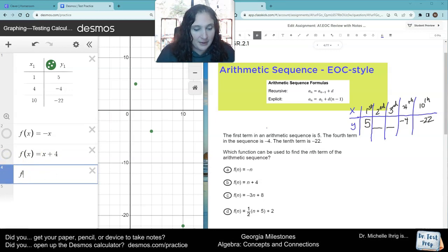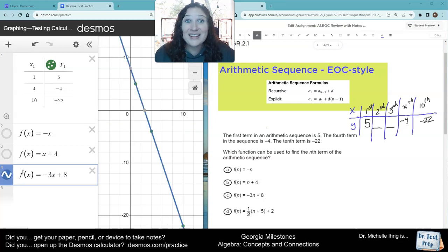So now I'm going to turn that one off and type in the third answer choice. Negative three x plus eight. Look at that! Do you see how it goes through all of my green dots? It goes through all my green dots.